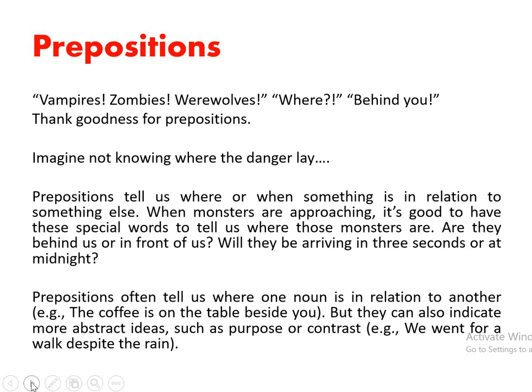In real sense, prepositions often tell us where one noun is in relation to another noun. For example, 'the coffee is on the table beside you' — here we have three nouns: the coffee, the table, and you. The relationship between coffee and table is built by 'on,' and between table and you by 'beside.' But prepositions can also indicate abstract ideas such as purpose or contrast. For example, 'we went for a walk despite the rain' — 'for' indicates purpose, and 'despite' shows contrast, meaning although it was raining, we still went for a walk.